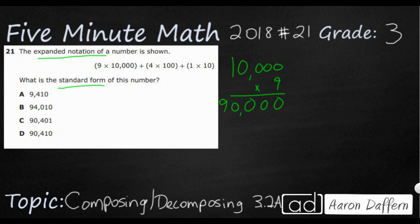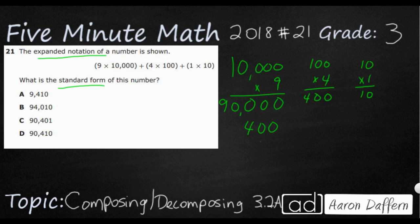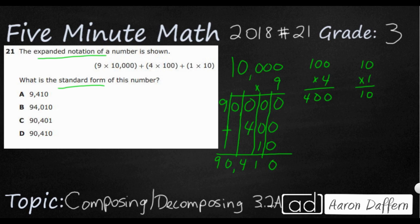Now I've got 100 times 4. You probably know that as a fact or from multiples of 10. So now we've got 400. And then 10 times 1 — hopefully we've got that as a fact — that's 10. Let's line those up and add, making sure to account for all the zeros. We get 90,000 — putting our comma down — 410. So here is the correct answer. That is the long way of doing it.